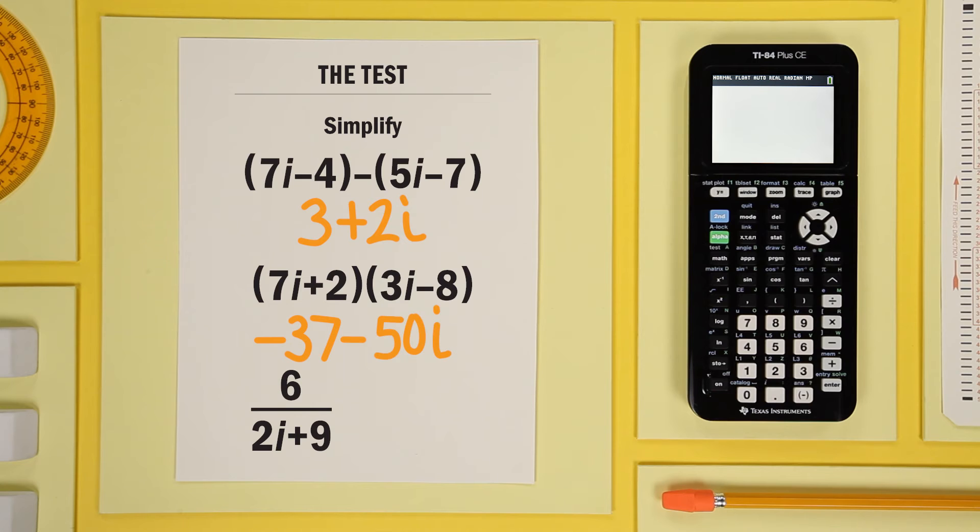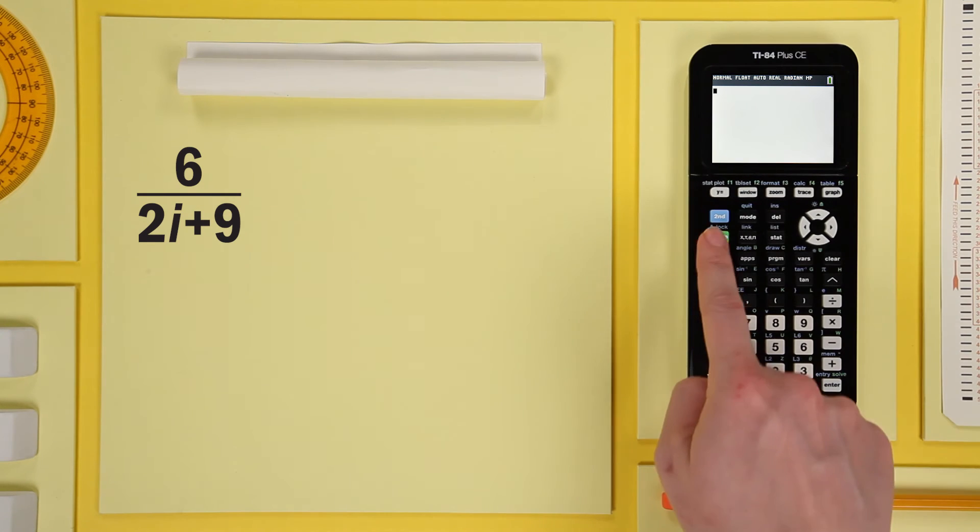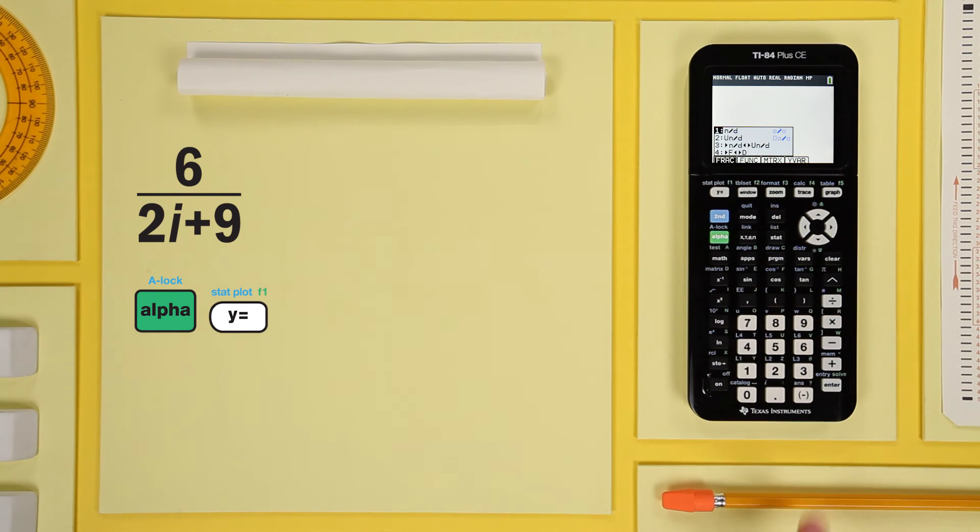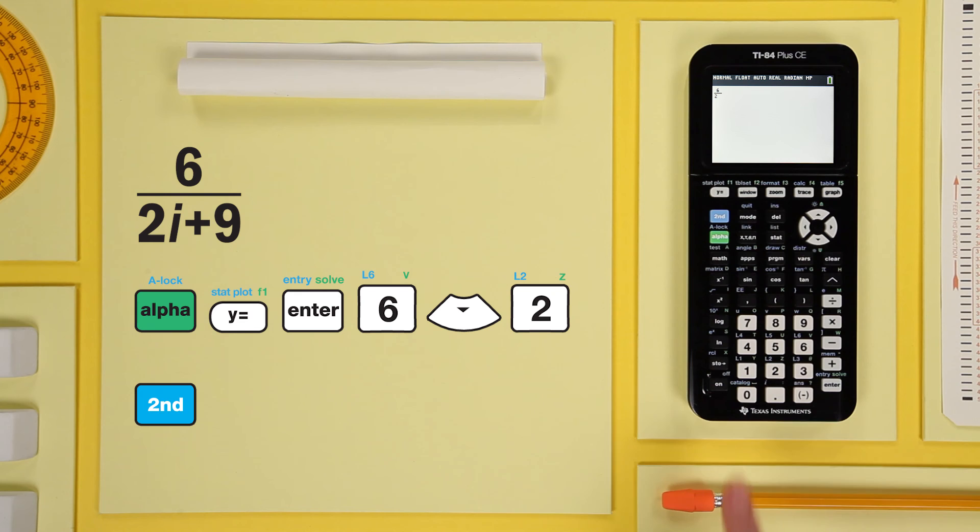Great! One more, and this one's a little different. 6 over 2i plus 9. Start with the alpha key, press F1, and select the fraction template. Then 6, down arrow, 2, second, i, plus 9, and enter.